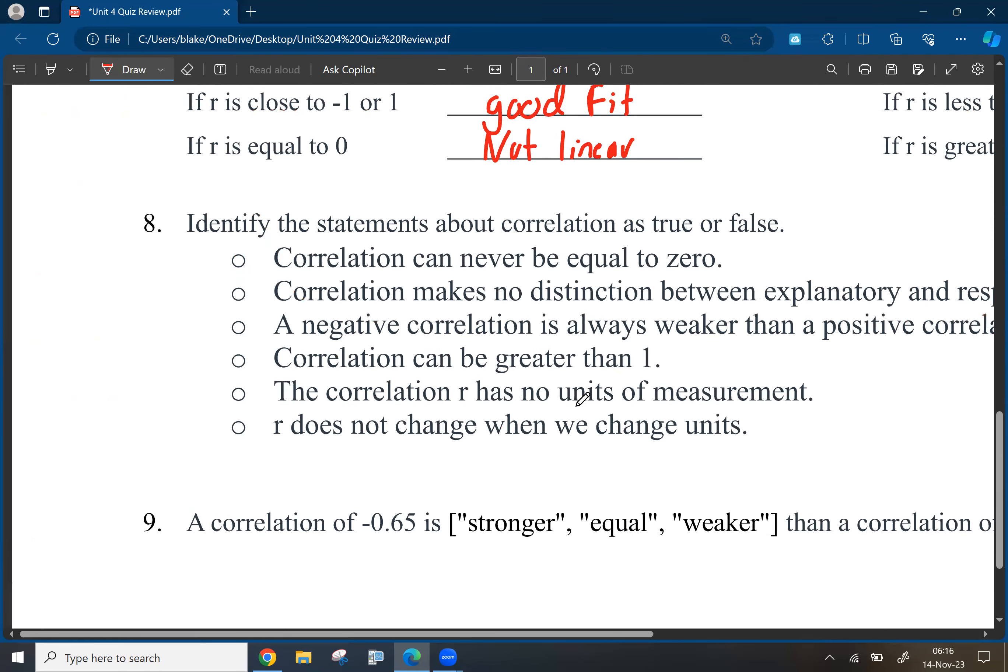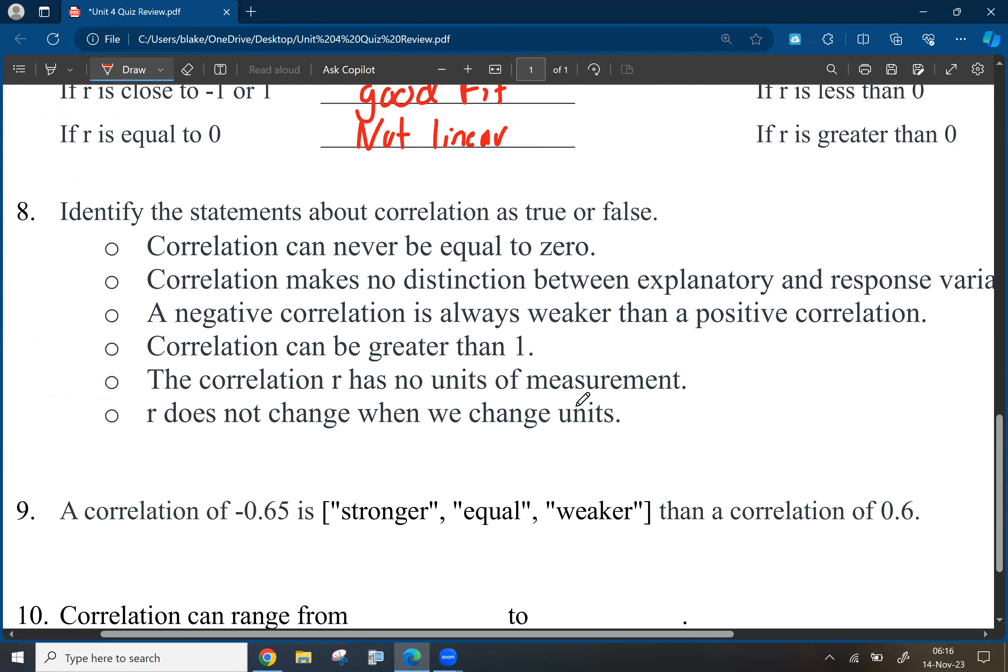Number eight. Identify statements about correlation as true or false. So, first one, correlation can never be equal to zero. That is false. It can be equal to zero. It falls within the negative one, the positive one region. So that can be true.